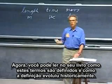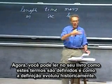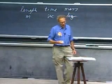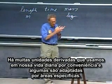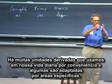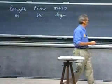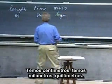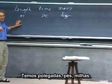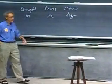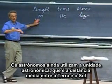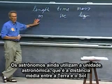You can read in your book how these are defined and how the definition evolved historically. Now there are many derived units which we use in our daily life for convenience, and some are tailored towards specific fields. We have centimeters, millimeters, kilometers, inches, feet, miles. Astronomers even use the astronomical unit, which is the mean distance between the earth and the sun.